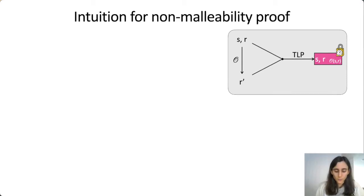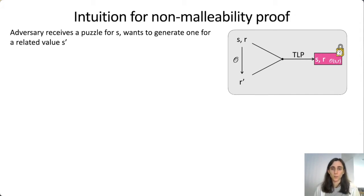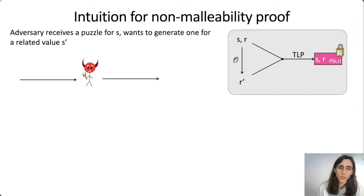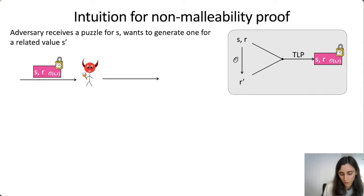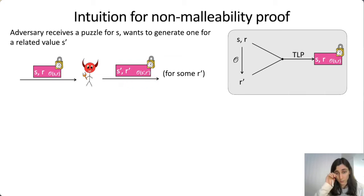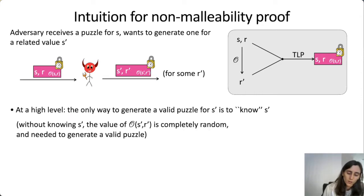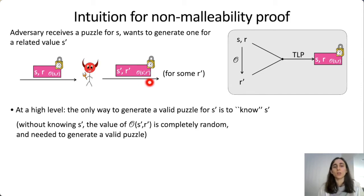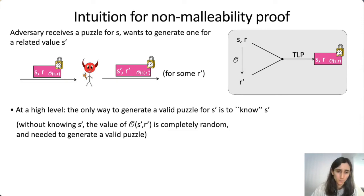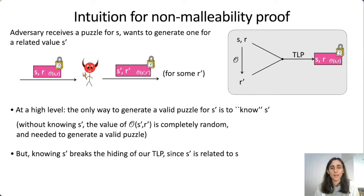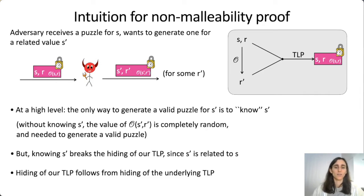Here's some intuition on why this is non-malleable. The man-in-the-middle adversary gets a puzzle for S generated with randomness R—denoted as a puzzle for (S, R) using randomness O(S, R)—and his goal is to generate a new puzzle for some related value S′. At a high level, since this new puzzle depends on the random oracle evaluated on S′, the only way to generate a valid puzzle for S′ is to know S′. But if S′ is related to S, the only way to know S′ is to know S—and this would break the hiding of our time-lock puzzle, which follows from the hiding of the underlying one.